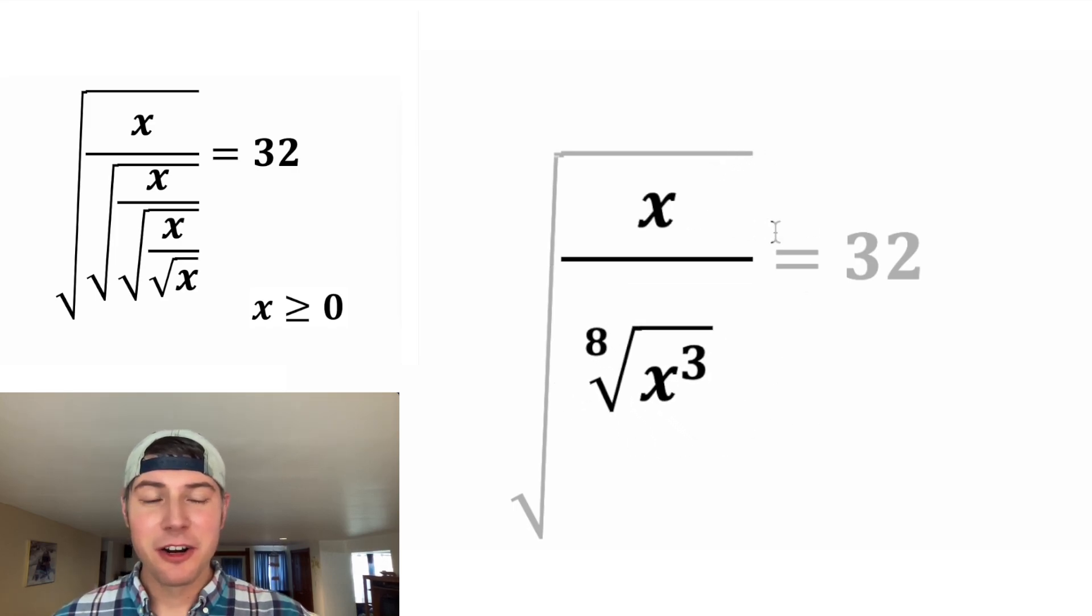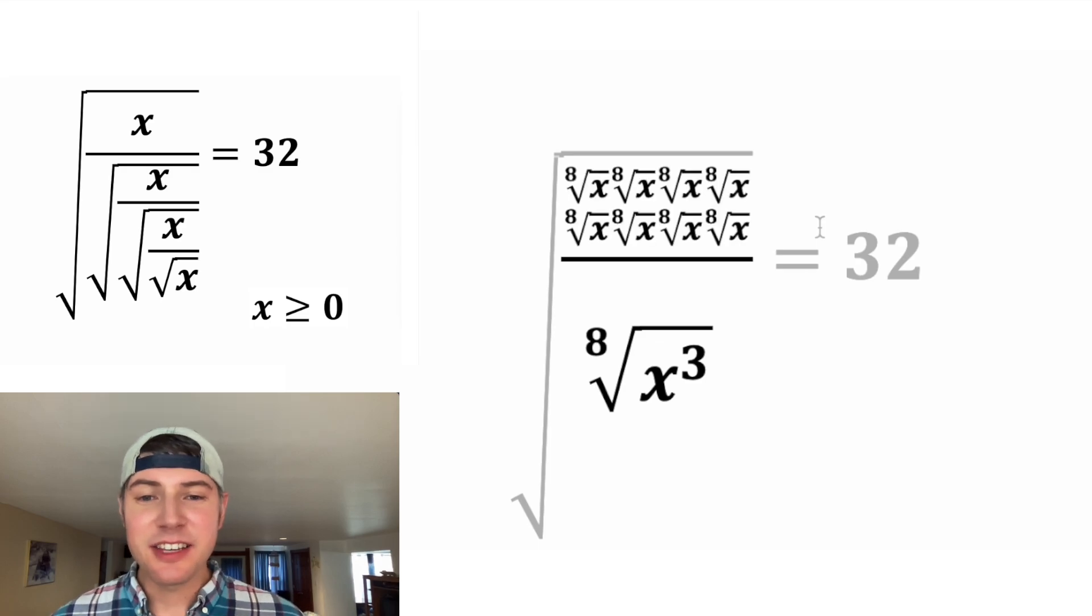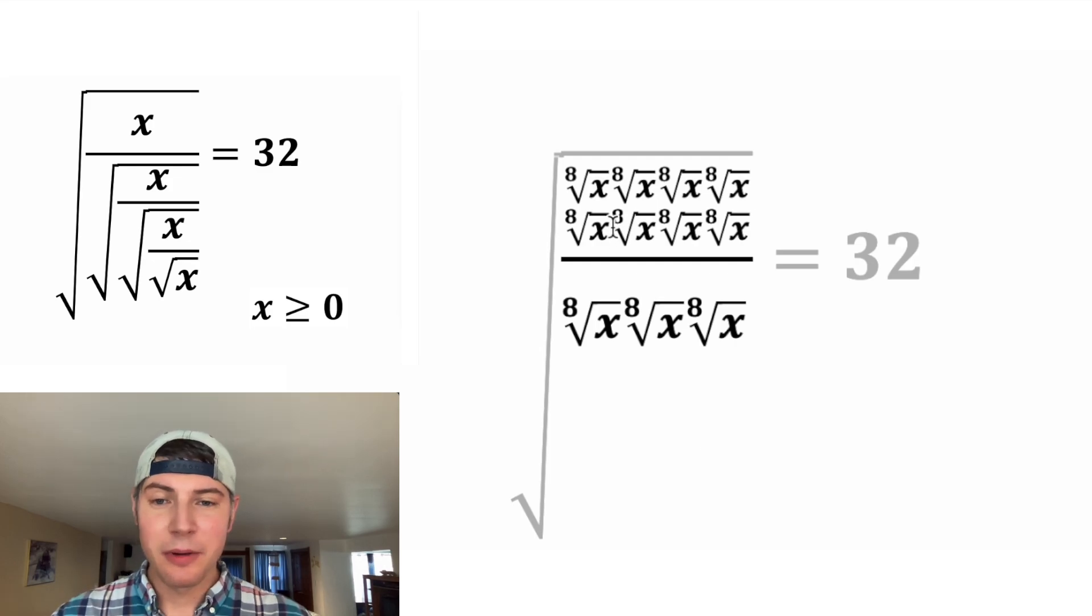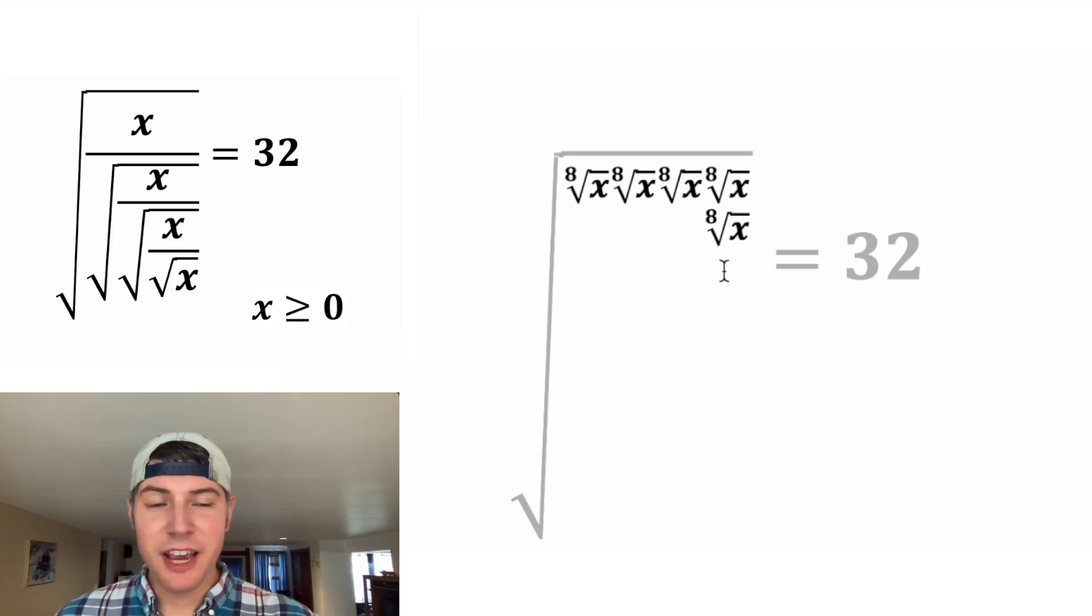And then looking at this x up here, we can break this down into eight eighth roots of x. And this eighth root of x cubed, this three here is telling us there are three of those. Now we can cancel one of these with one of those, another one with another one, and the third one with the third one. And we're left with five of these eighth roots of x.